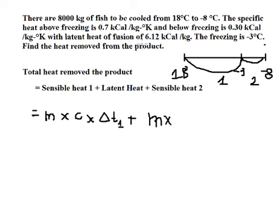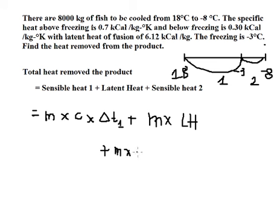For the latent heat, that is mass multiplied by 6.12 kilocalories per kilogram — that's the latent heat value. Then we also have m multiplied by c multiplied by delta T number two.